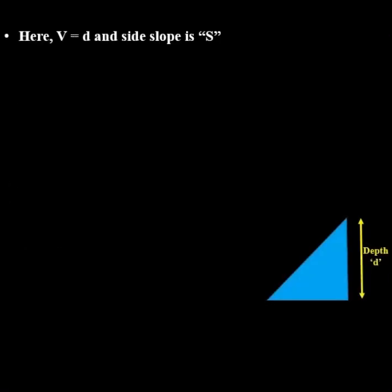Similarly, for V equal to depth D and side slope S:1, the equation will become S:1 = H:D. So, H will be equal to S into D.